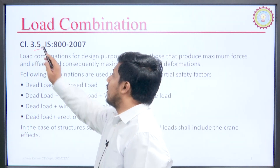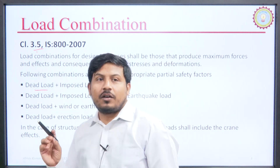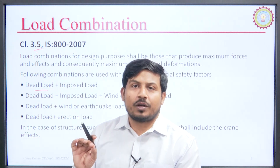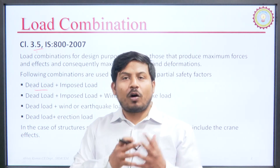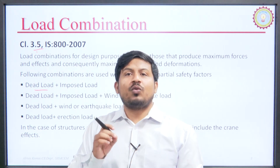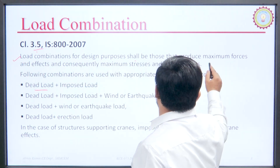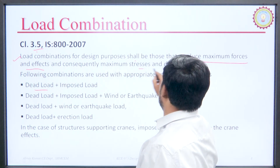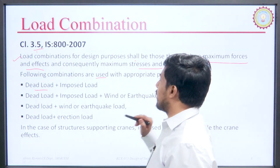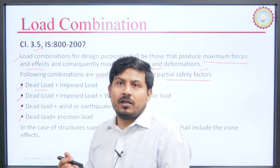Now let us talk about load combinations suggested by IS code under clause 3.5. In load combinations, the IS code says we do not design a building by targeting a single load only — we design by combining the effects of all these loads and picking out the most severe combination. That combination which causes the most stresses in the building is used to design the structure. The load combinations used shall produce maximum forces and consequently maximum stresses and deformations, with appropriate partial safety factors.